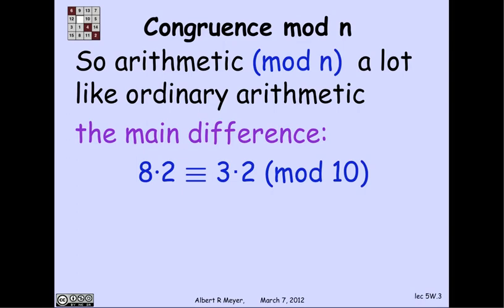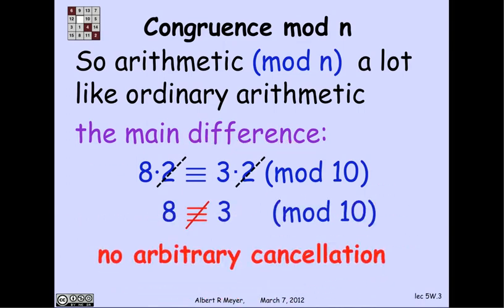And you'd be tempted, maybe, to cancel the twos. And what happens then? Well, then you could discover that you think that 8 is congruent to 3 mod 10, which it ain't. So in short, you can't cancel arbitrarily. You can't cancel 2, in this case, in particular.